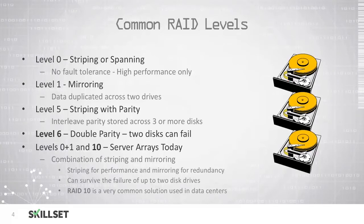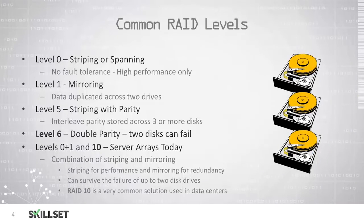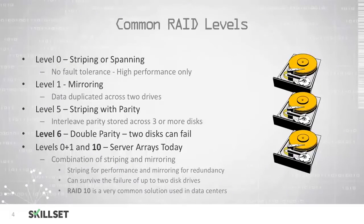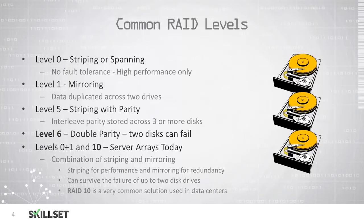With RAID level 5, we can lose one disk and not lose any data. With RAID level 6, we have double parity, and in this system two of the drives can fail. When we combine RAID levels 0 and 1, we call this RAID 10, and this is commonly used in servers in data centers.